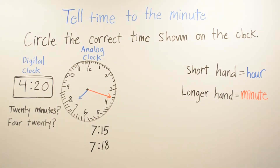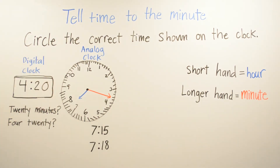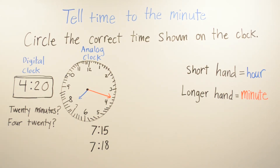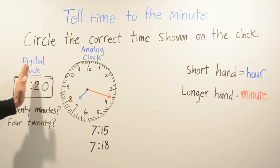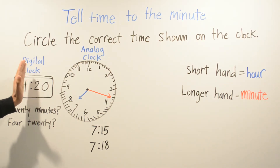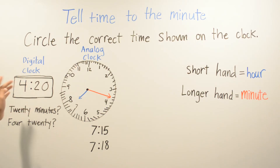So here we still have a digital clock and an analog clock. Let's start off with the digital clock. Our time is 4:20. Let's find the correct answer. Is it 20 minutes? No, because 20 minutes will only be 20, without the 4. So it's 4:20.